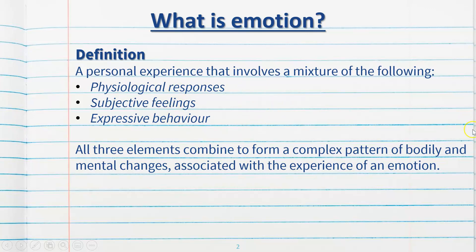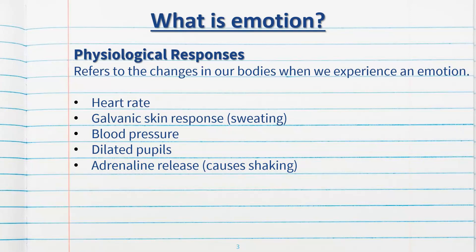Let's talk about these three aspects in more detail. First, physiological responses — physical responses is fine as well if that's easier. This refers to the changes in our bodies when we experience an emotion. The main ones include an increase or decrease in heart rate, our galvanic skin response so we start to sweat, an increase or decrease in blood pressure, dilated pupils, and hormone releases such as adrenaline, which is what causes that shaky feeling. Crying and experiencing butterflies in the stomach are also physiological responses. Anything that our body does in reaction to an emotion that's often involuntary is considered a physiological response.